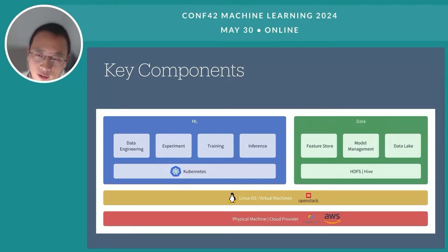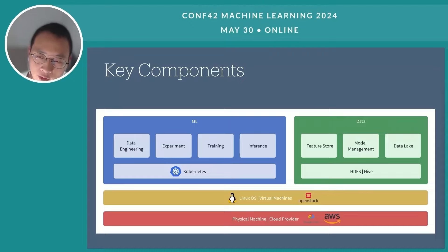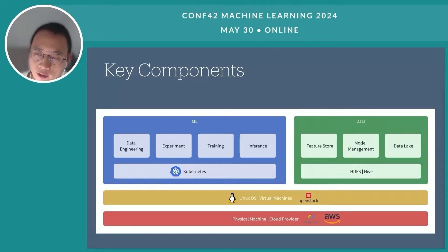Here I use a simplified service diagram. A typical machine learning platform can be divided from top to bottom into an application layer, infrastructure layer, and hardware layer. In the application layer, it's divided into a machine learning part and a data part. The machine learning part is typically divided into four subparts: data engineering, experiment, training, and inference.